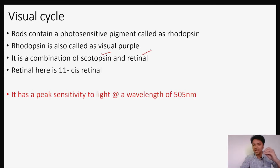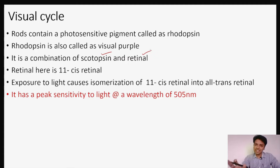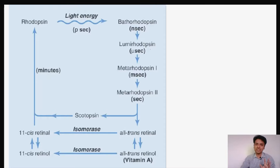The retinal present in rhodopsin is 11-cis retinal. This 11-cis retinal has a peak sensitivity to light at a wavelength of 505 nanometers. Whenever light strikes rhodopsin, the 11-cis retinal is converted into all-trans retinal. Maximum conversion of 11-cis retinal into all-trans retinal occurs at 505 nanometers.